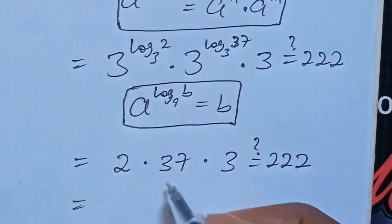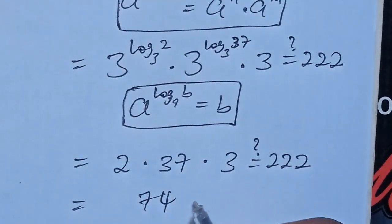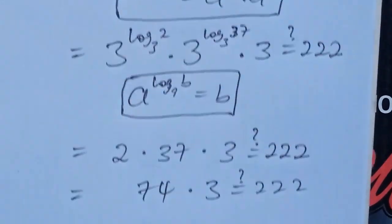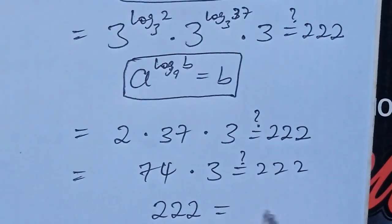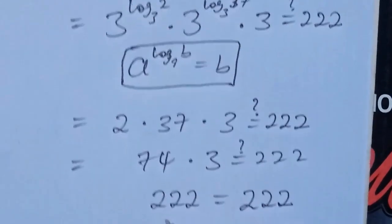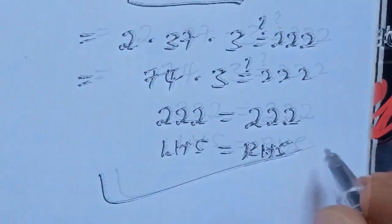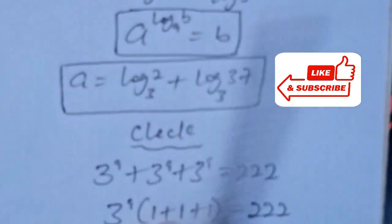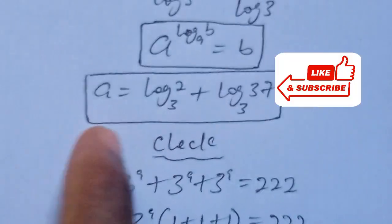If we multiply 2 by 37, we are going to have 74. Then 3 multiplied by 74 will give us 222, which is equal to 222. This means that LHS equals RHS, which proves that the value of A equal to log base 3 of 2 plus log base 3 of 37 is correct.